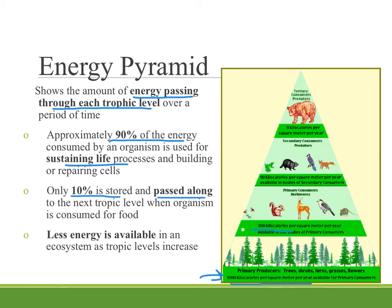Again, 90% of that is used to sustain life in those organisms, so only 90 kilocalories are available to be passed on to our secondary consumers. And then we get to our tertiary consumer and only 9 kilocalories per square meter per year. As we move up an energy pyramid, we see that less energy is available in an ecosystem as trophic levels increase. Without enough producers at the bottom to bring energy into the system, the amount available at the top level is going to be very small.